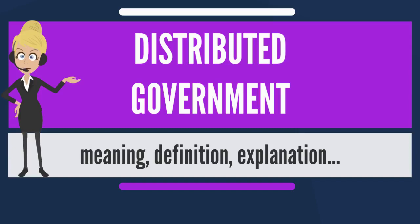a different situation in which the same party controls both the executive and legislative branches. In systems with a strong president and prime minister, called semi-presidential systems, such as in France, divided government is known as cohabitation.